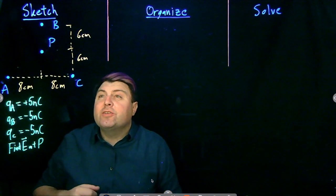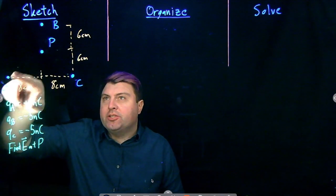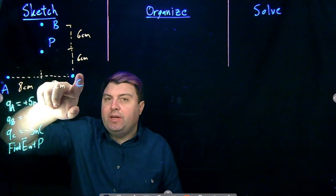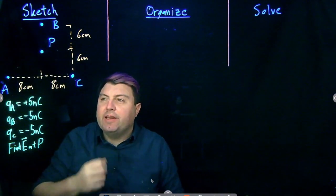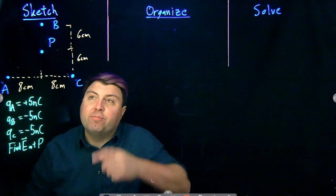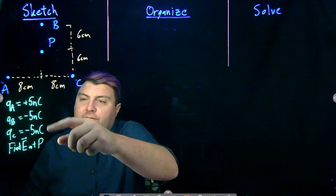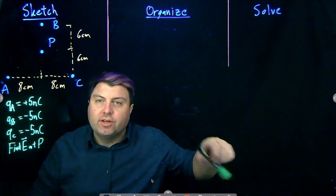Welcome! We have three charges A, B, and C. We want to find the net electric field from them at point P, given these charges.